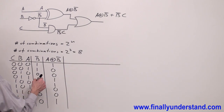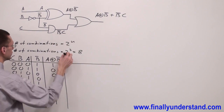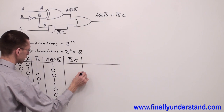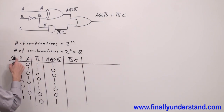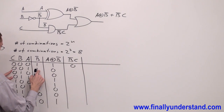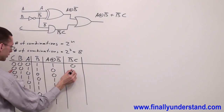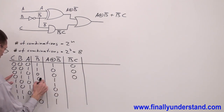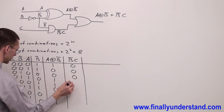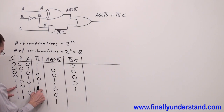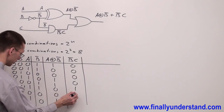Next, I have B'C — this is the AND gate, the product of B' and C. Computing each row: 0·1=0, 0·1=0, 0·0=0, 0·0=0, 1·1=1, 1·1=1, 0·1=0, 0·1=0.